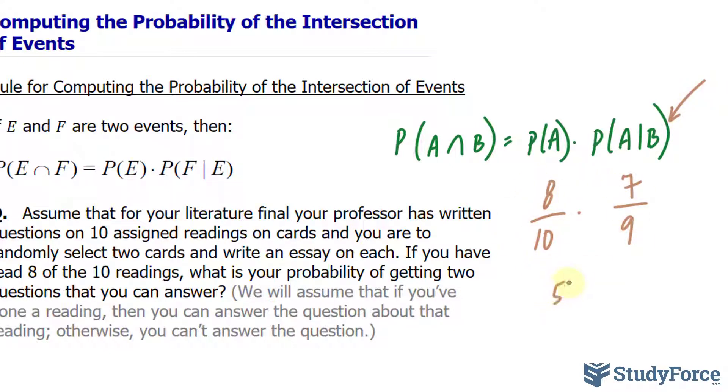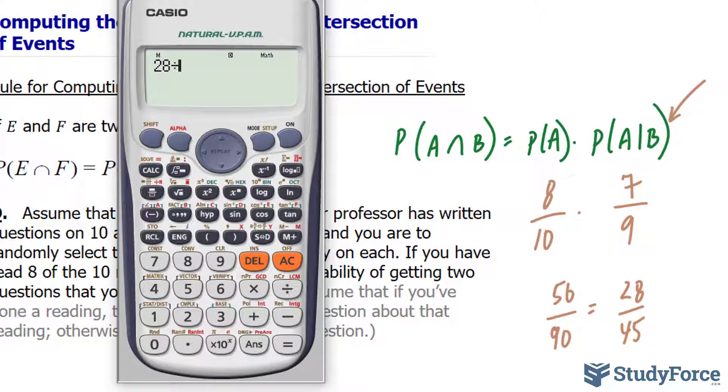Multiplying these out, we get 56 over 90. And reducing this down, we get 28 over 45. Let's find out what the percentage is. 28 divided by 45 is equal to 0.62 repeating, multiplying that by 100%, we get 62.2%.